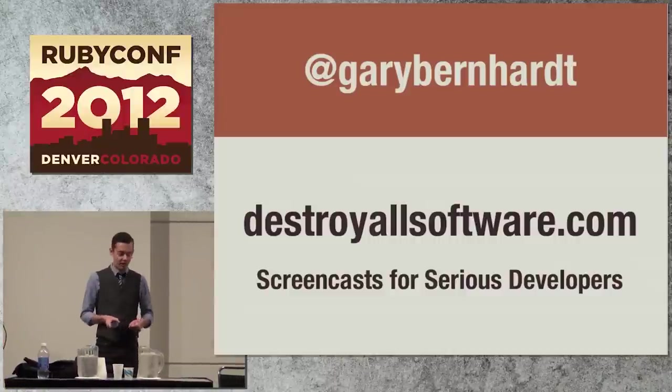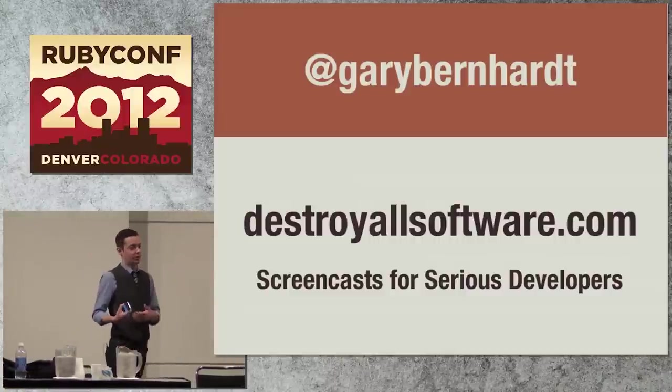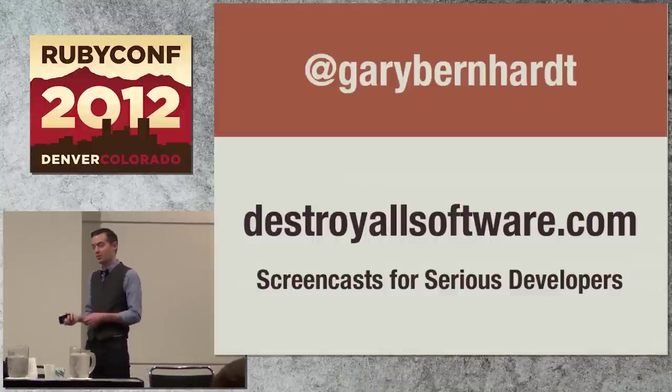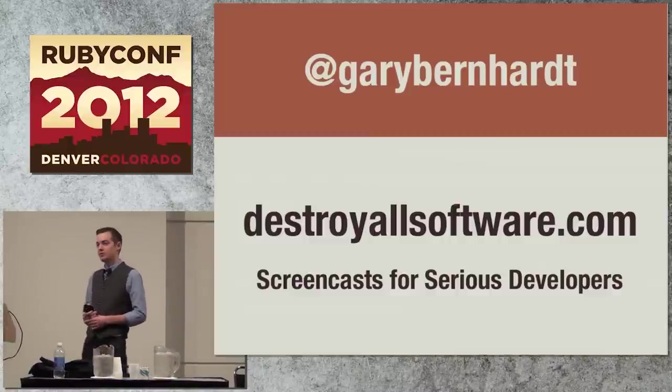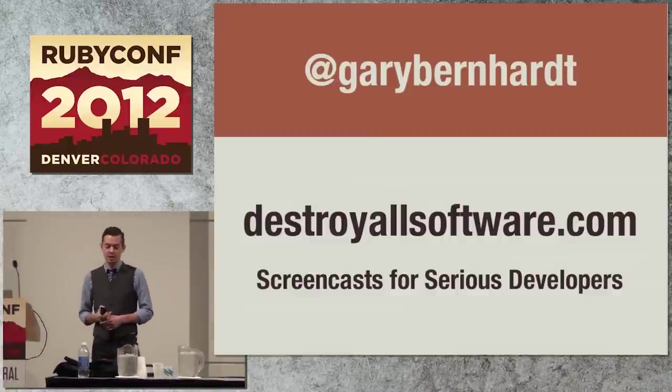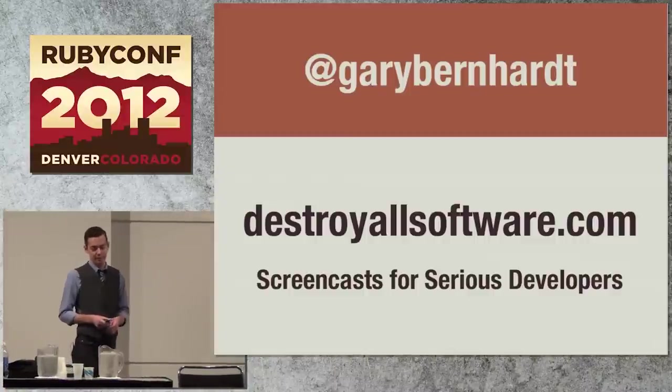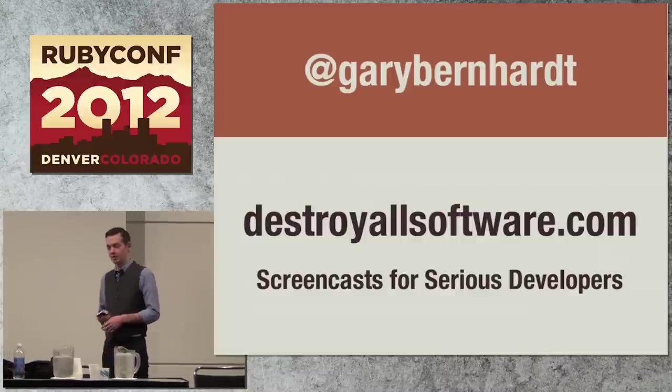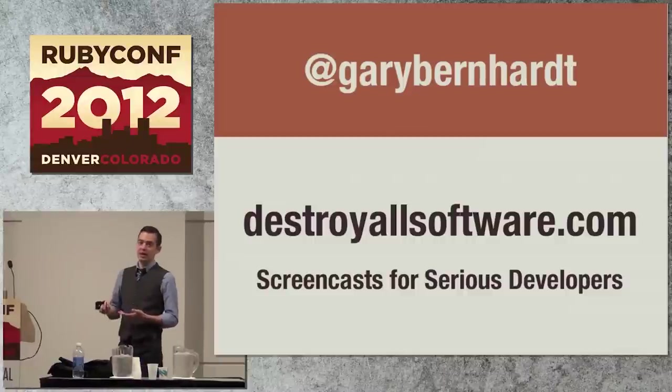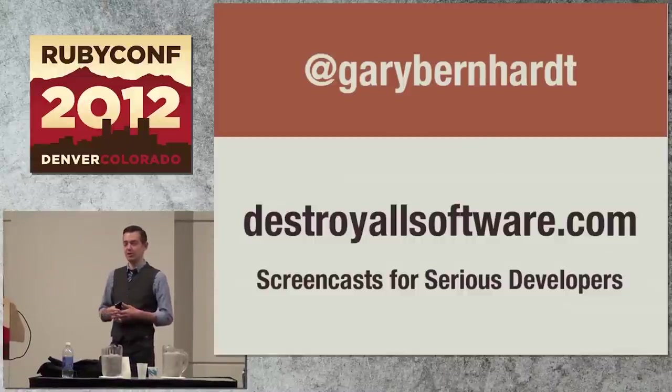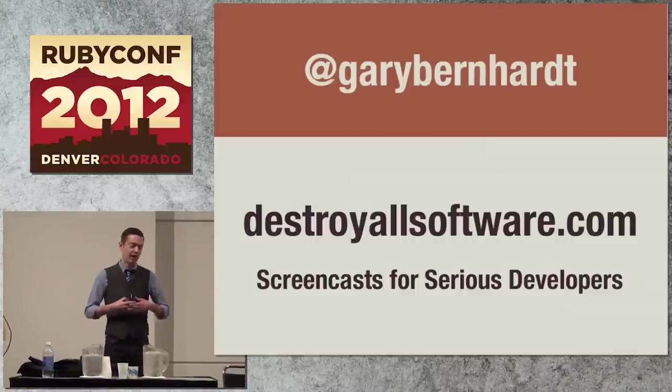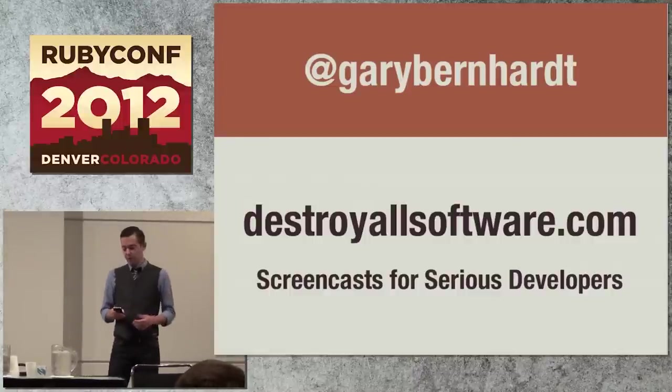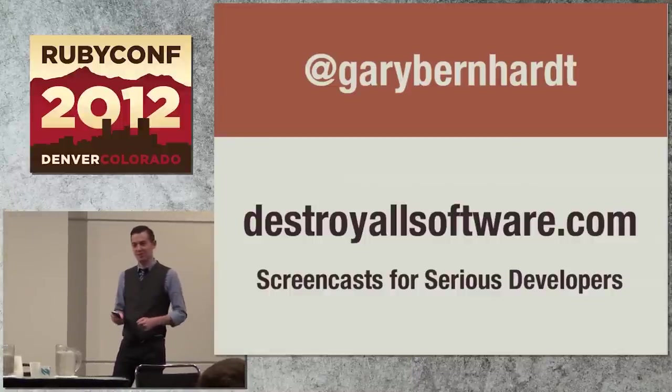So that is the end of the actual talk. Once again, I am Gary Bernhardt. I run Destroy All Software, which produces screencasts. And if you are a subscriber or want to become one, it is not free, but there is a screencast on Destroy All Software called Functional Core Imperative Shell, which is the first time I ever talked about this in public. And the one that's coming out two weeks from now is also about this topic. And in that screencast, I give a much larger example that I can't really give here. But I show you the Twitter client and how it's arranged and how the different parts of the system are segregated in this way. So with that, thank you guys very much for listening to me for half an hour.